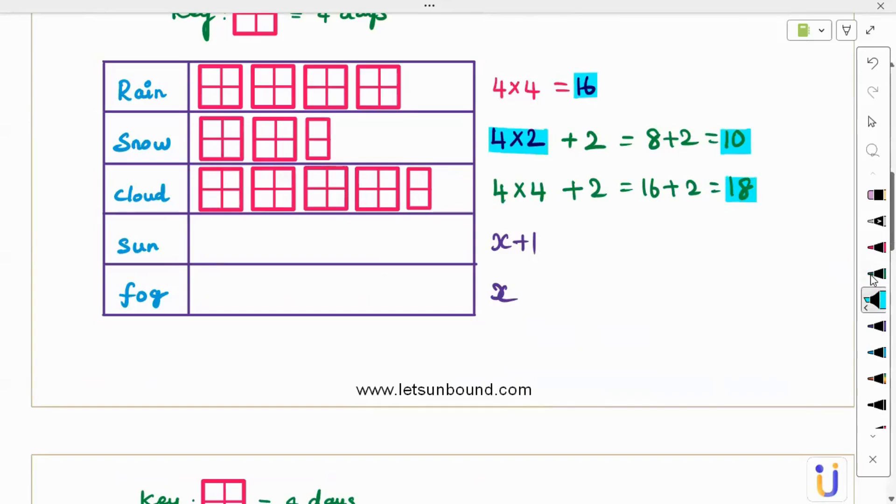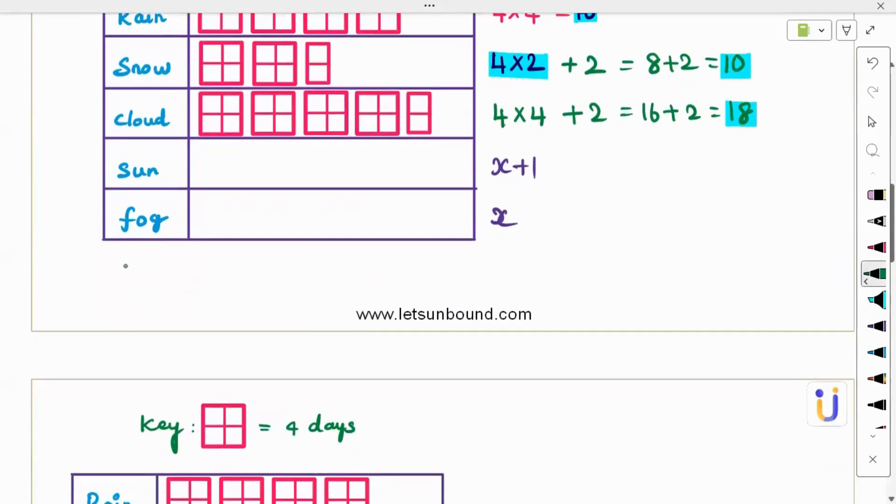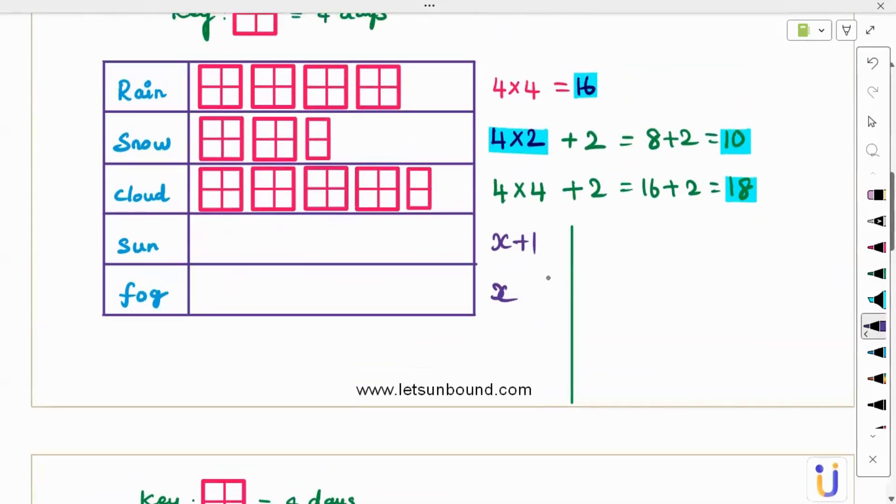So how to solve this? Here we go. Sum of all this is 55 days. The complete pictograph report is for 55 days, so we need to solve 16 plus 10 plus 18 plus x plus 1 plus x. All this should be equal to 55.